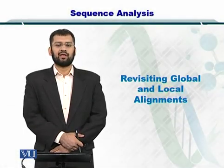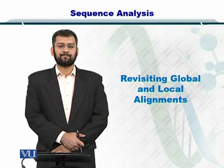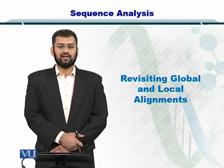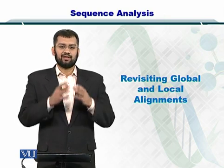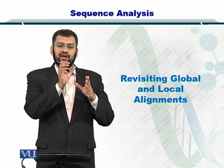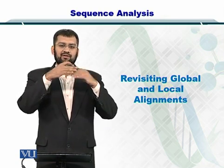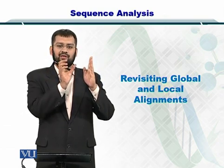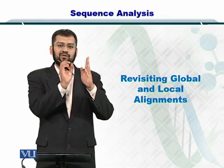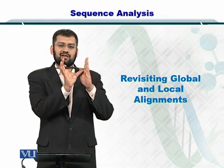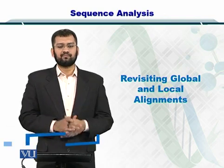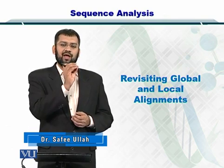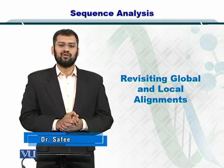Dear students, you already know that there can be two types of alignments. The first one was the local alignment while the second one was the global alignment. In global alignments, we had two sequences sliding across each other such that their overall lengths were equal. If one sequence was short, we inserted gaps and stretched it to match the longer sequence. For local sequence alignment, we did not do that and were happy with just the local alignments between the two sequences.